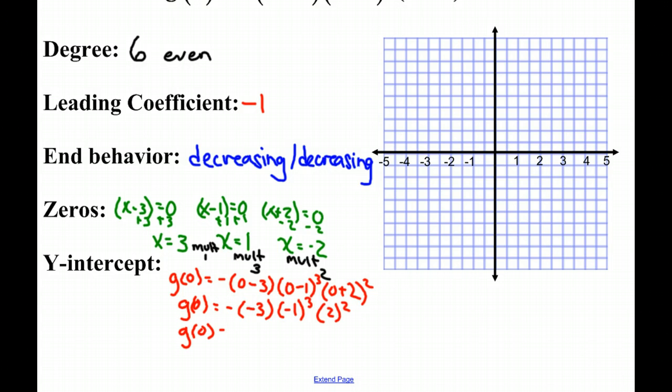g of zero will be negative times negative 3 is a positive 3, negative 1 cubed is a negative 1, and 2 squared is 4. Now g of zero will equal 3 times negative 1 times 4, which is negative 12.